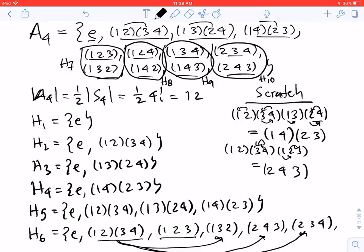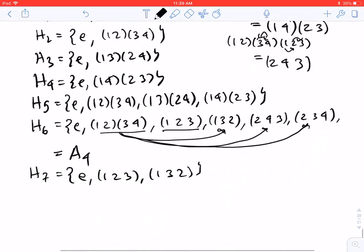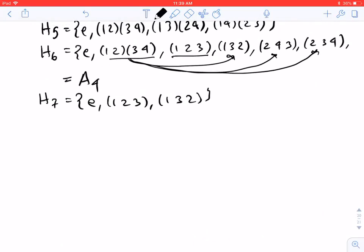Fine. Well, what if I want to mix some of the 3 cycles? What if I put in two of them? So let's try doing an H11. So this is where I'll have the identity. I'll put in (1 2 3), which immediately gives me (1 3 2). Also put in (1 2 4), which immediately gives me (1 4 2).